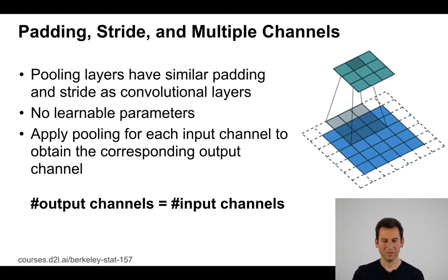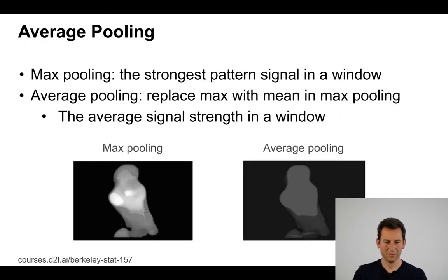So there we go. If I do this, here's a 3 by 3 pooling and I get a smaller image out of it because I'm using a stride of 2. This padding of 1 stride of 2 will reduce the image resolution.